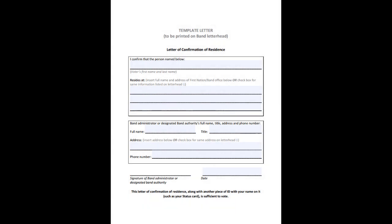Let's scroll over to the second page and you'll find the letter of confirmation of residence template. You can either print the second page at home on a blank piece of paper and then bring it to the band to fill out, or the band can print out blank copies on band letterhead. If you're going to print it off at home, delete the first two lines that say 'template letter to be printed on letterhead.'